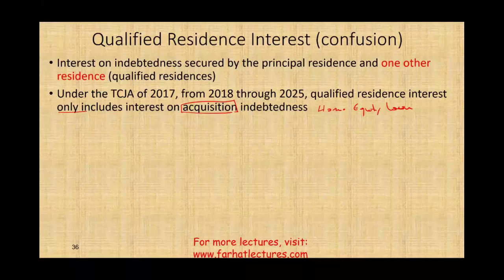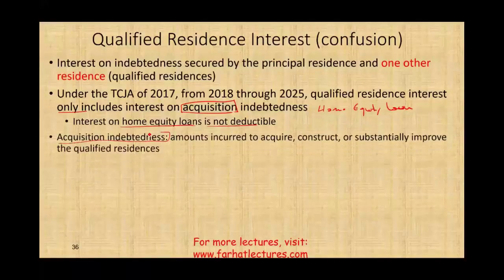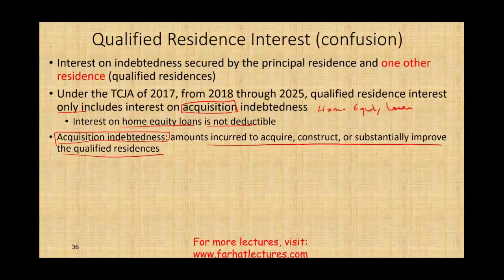The only interest that's deductible now is for the acquisition — meaning when you buy. Acquisition debt is the amount incurred to acquire, construct, or substantially improve the qualified residence. So any amount you incur to buy, build, or substantially improve — that's acquisition debt, and the interest on that debt is still deductible. What they took away is the home equity loan. Home equity loan is when you go to the bank and get a second loan against the property to maybe take a vacation, buy a car, or buy a boat — that interest is no longer deductible.